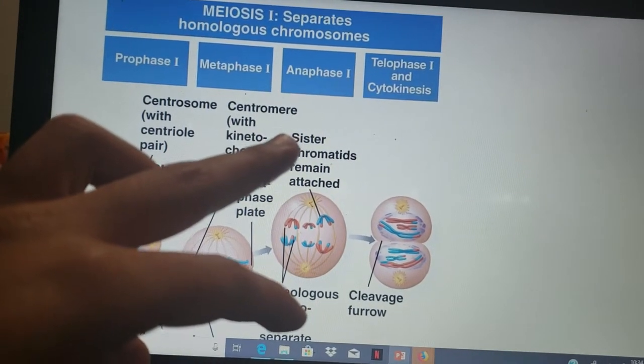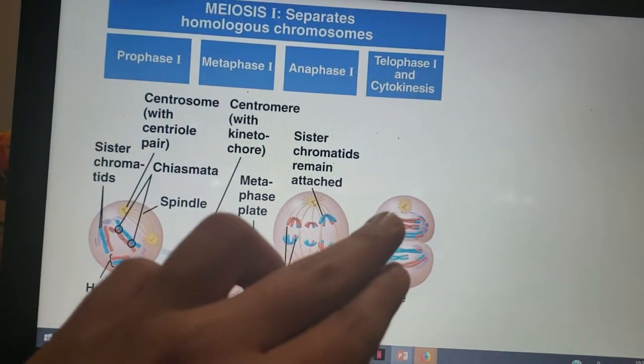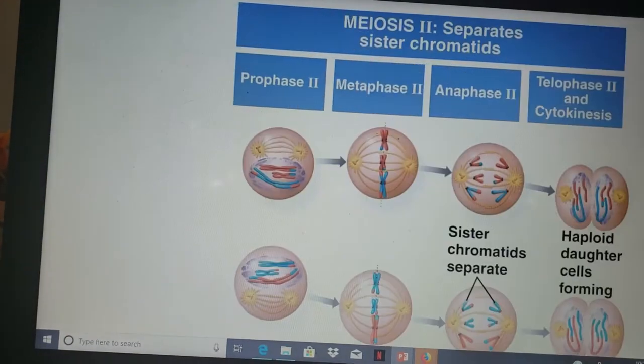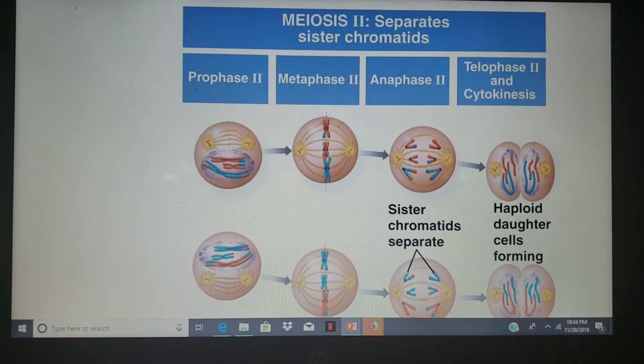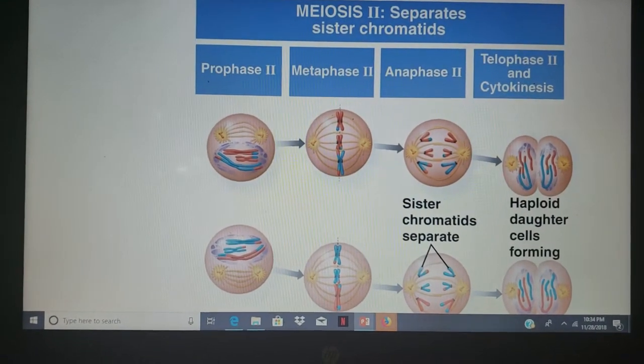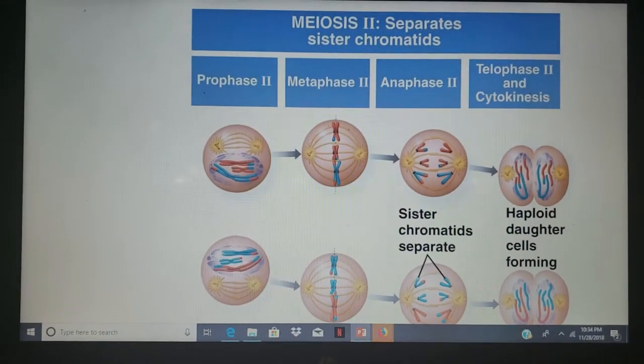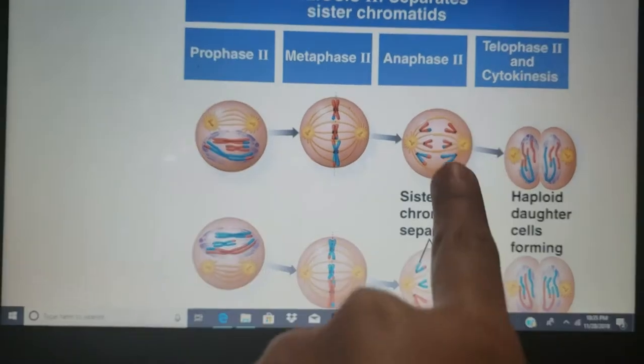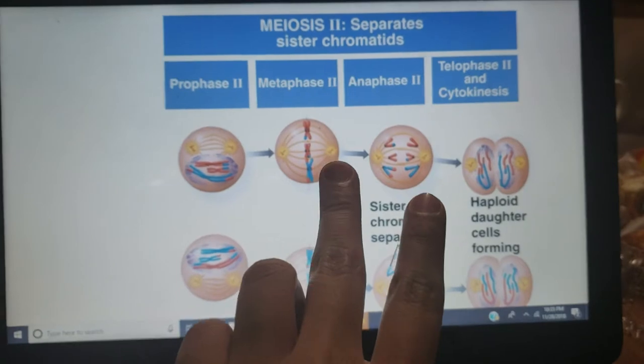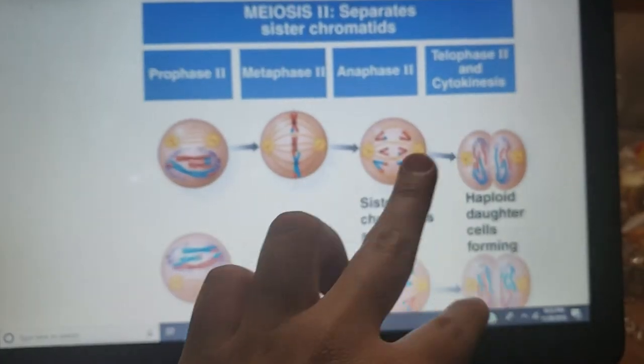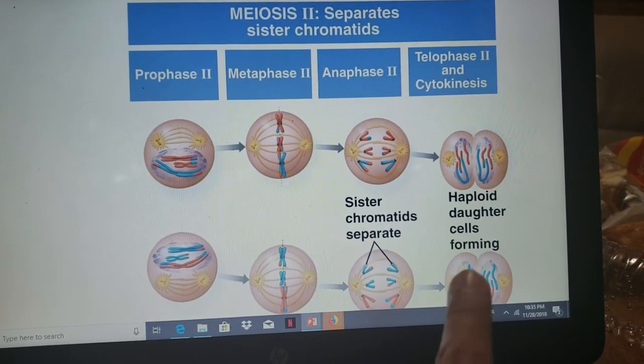Then we have meiosis II, where we have the separation of the sister chromatids. Here we don't have an S phase. At the end, we see the sister chromatids separating, forming the four haploid daughter cells.